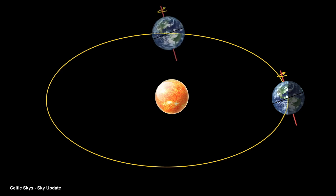You will note in the diagram that the axis around which the Earth spins is at an angle to the plane of its orbit. So this means that, in effect,